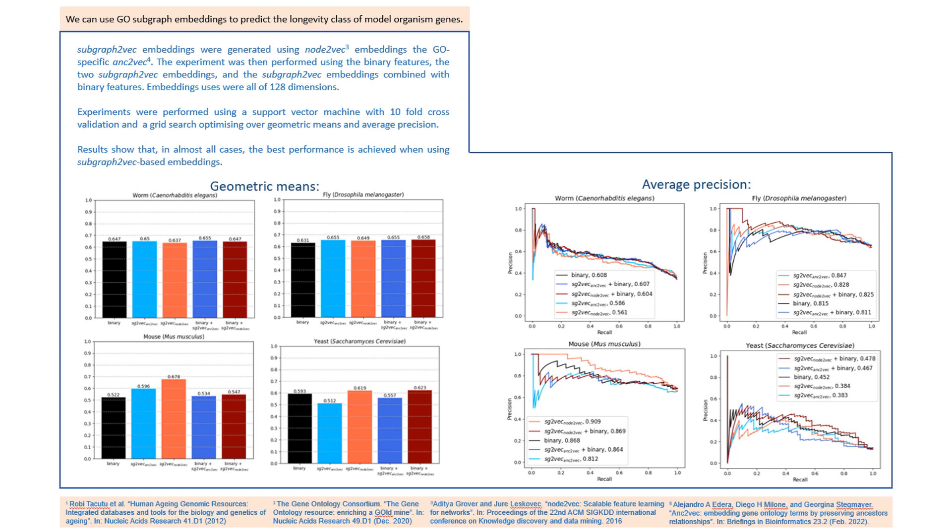But overall, research suggests this technique to be promising in combining node embeddings and capturing the hierarchy of gene ontology, and eventually then generating features to predict the longevity class of genes for model organisms. Thank you.